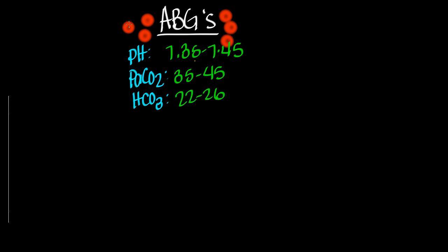So let's look at these things here. Our first thing is pH, right? We know that our normal range of pH is 7.35 to 7.45. Our PaCO2, or CO2, our normal range for that is 35 to 45. And our bicarb, or HCO3, our normal range for that is 22 to 26.